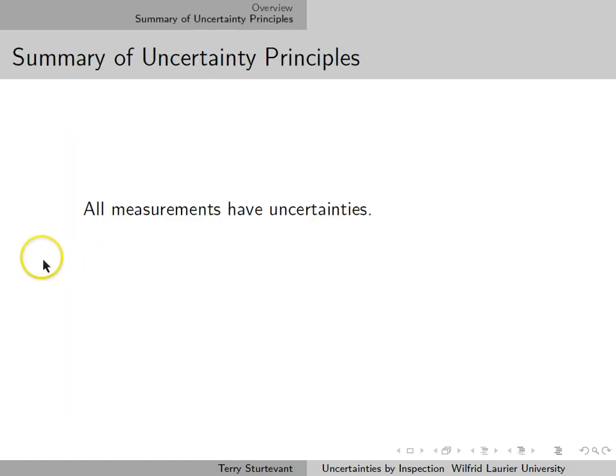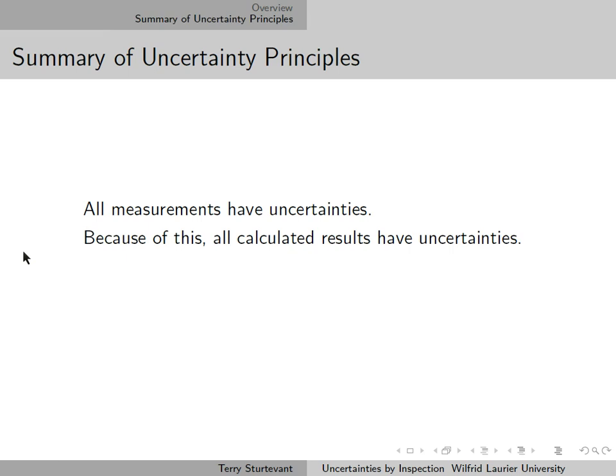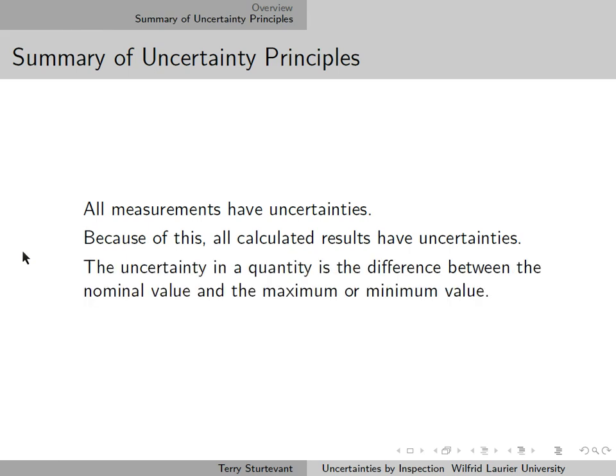To summarize: all measurements have uncertainties. Because of this, all calculated results have uncertainties. The uncertainty in a quantity is the difference between the nominal value and the maximum or minimum value given by the uncertainties.